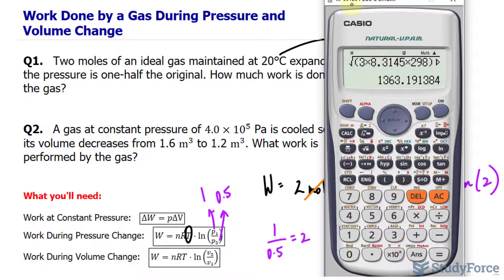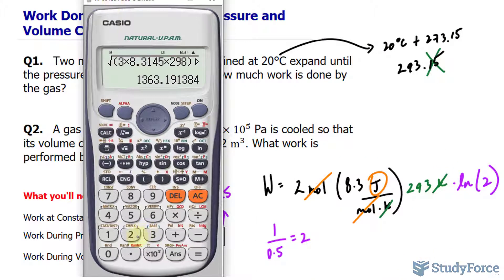So going to our calculator, we have 2 times 8.3 times 293 times ln 2 gives us 3,373 joules. And if we want this to the correct number of significant figures, it should be 3,370.